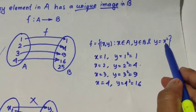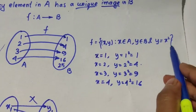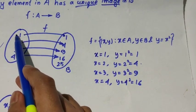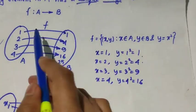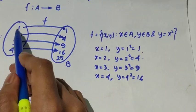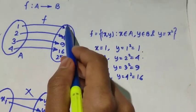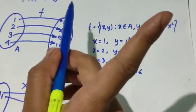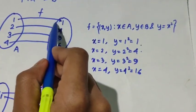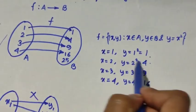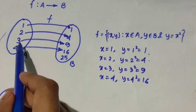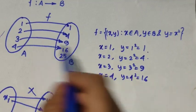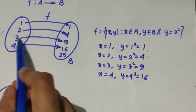Given y = x², from this relation we can check that if x = 1, we get y = 1. You can see that 1 belongs to A and y = 1 belongs to B, so for x = 1 we have only one answer — one image. For x = 2 there is only one answer, y = 4. Similarly, for x = 3 there is a unique solution, y = 9.